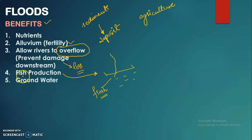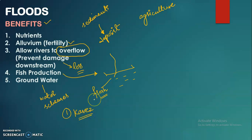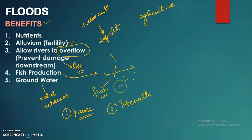Floods also benefit groundwater levels, which supports irrigation water schemes like karez and tube wells. Karez is an underground water channel used for irrigation. When floods cause infiltration (seepage), the underground water level rises. This raised groundwater level can then be utilized through karez channels and tube wells, which are also used for irrigation, helping agricultural productivity.